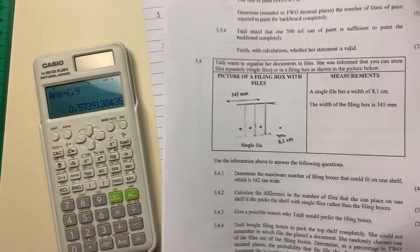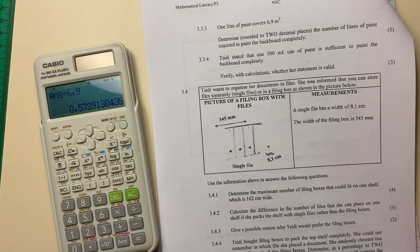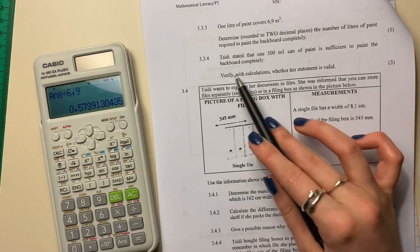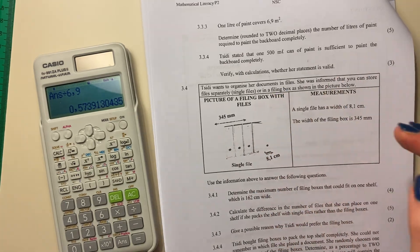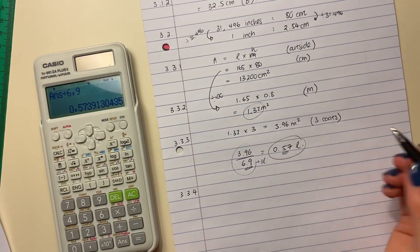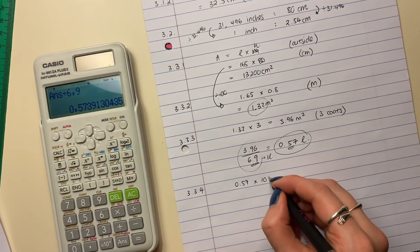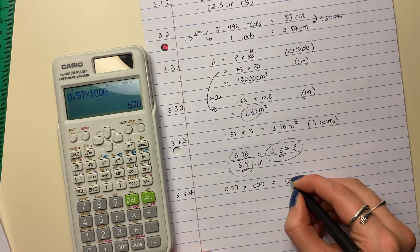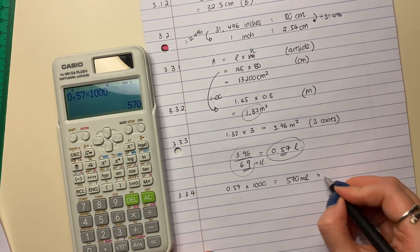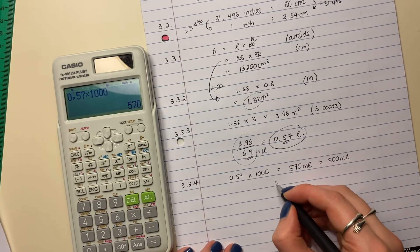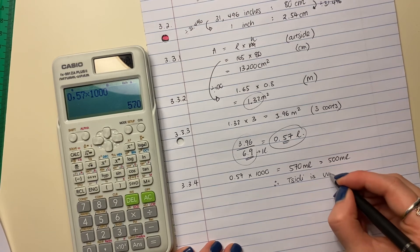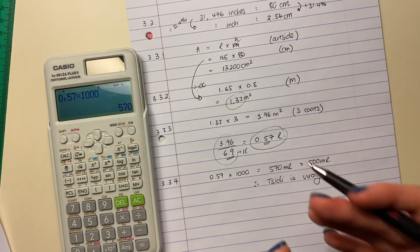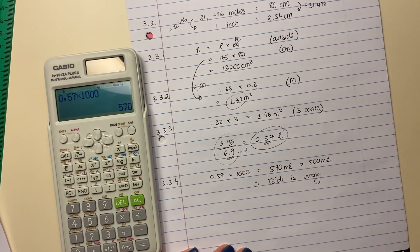Let's do the last question for this video. It says, Citi stated that only one 500 mil can of paint is sufficient to paint the backboard completely with all the coats. Verify with calculations whether her statement is valid. So we're going to convert this into milliliters. You should remember that there are 1,000 milliliters in one liter. So now 570 milliliters is greater than 500 milliliters and therefore Citi is wrong. So remember with these questions, you have to do the math and then you have to come to a conclusion. Please don't forget to come to a conclusion. That is what the question is asking. Let's move on to the next part of question three.